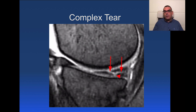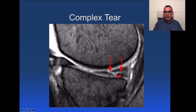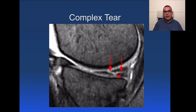Complex tears have both horizontal and vertical components. You can have a horizontal combined with a vertical longitudinal or vertical radial — branching and mixing. When you see a horizontal component and a vertical or oblique component passing through both surfaces, call this a complex meniscal tear. Always clarify whether the edges are clear or macerated, note any meniscal fragments, whether the meniscus is amputated, and any intraarticular loose bodies.